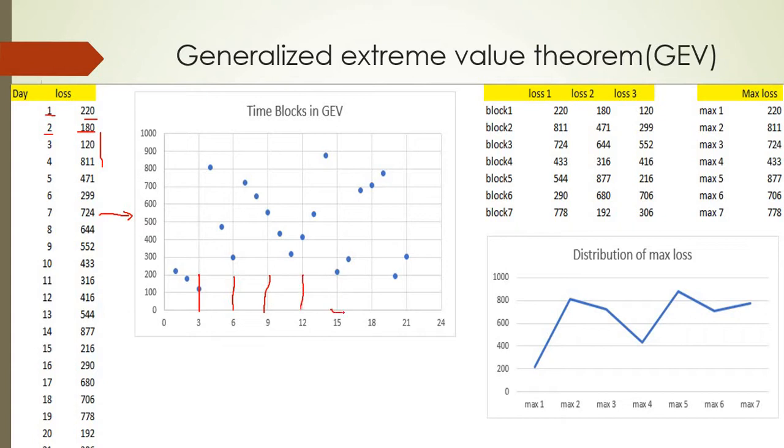Now if you see, what we've done is divided this into blocks of three days each: zero to three days, three to six days, six to nine days, nine to twelve, fifteen, eighteen, twenty-one, and twenty-four. For each block, we've picked up the maximum value in that block.